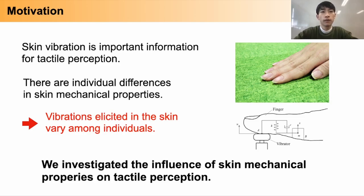Skin vibration is one of the important sources of information for tactile perception. For example, skin vibration represents roughness of texture, and it is also relevant to stiffness perception.